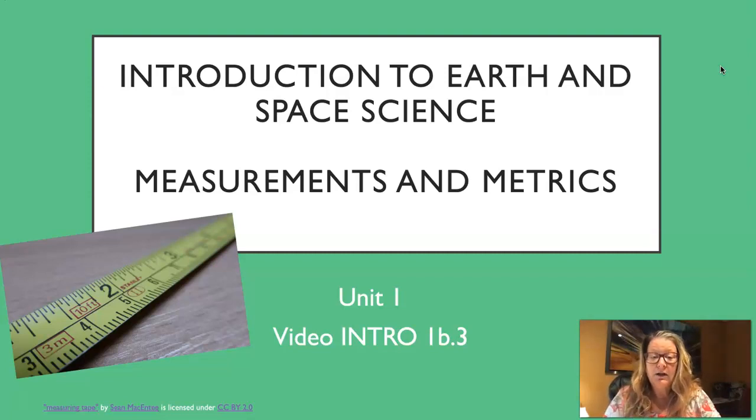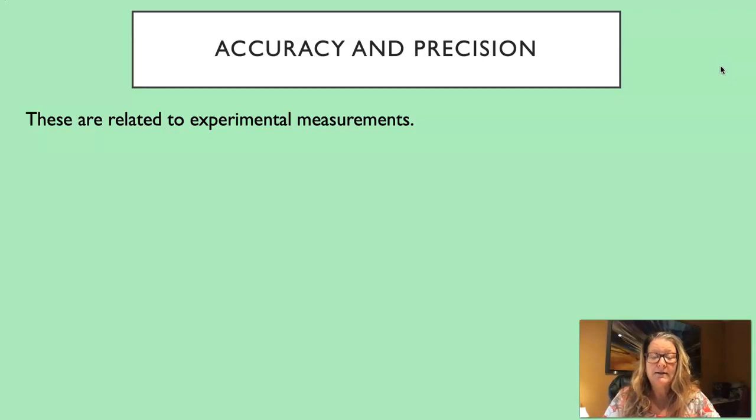Today we're going to talk about metrics and measurements, and this will be applicable to the lab we're going to do. So I want to start by distinguishing accuracy and precision. These are both related to making experimental measurements in the lab.